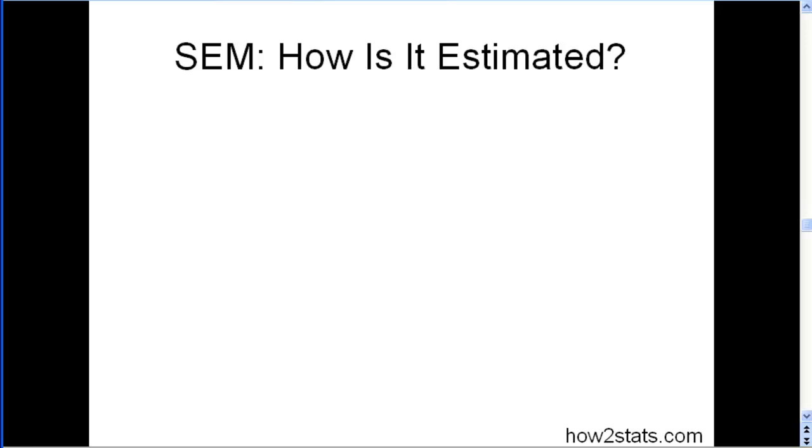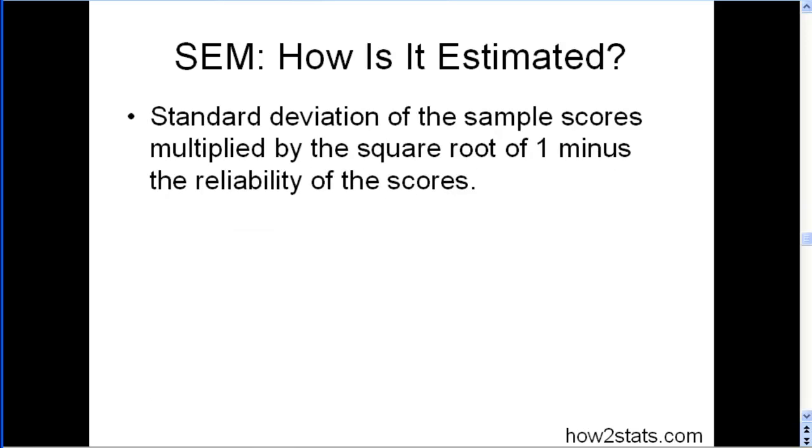So how is it estimated? We use a very basic formula. It's a standard deviation of the sample scores multiplied by the square root of 1 minus the reliability of scores. Now that sounds like a mouthful, but this is the formula. It's simply the standard deviation of scores, so let's say IQ scores, what's the standard deviation? And then we multiply that by the square root of 1 minus the reliability of those scores.